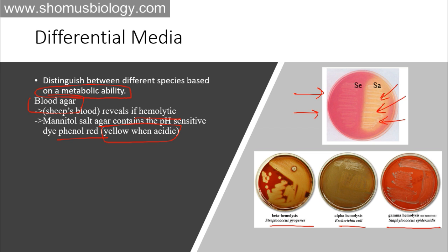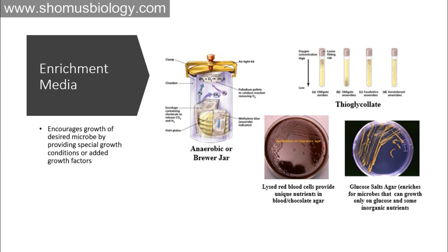Streptococcus pyogenes causes beta hemolysis of the agar medium — you can see the color has changed because the red blood cells are ruptured open. Alpha hemolysis is caused by E. coli, and the whole agar medium turns a darkish yellow color. Gamma hemolysis means simply no hemolysis at all — that's why it gets a separate name. Staphylococcus epidermidis causes no destruction of red blood cells in the medium, so they remain intact, and you can see a white colony on top of the red agar plate. This is how we can differentiate between different species using differential media like blood agar.